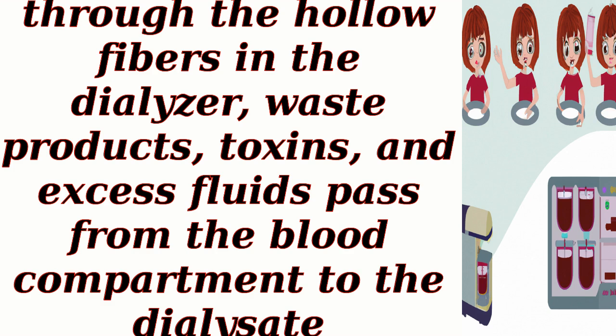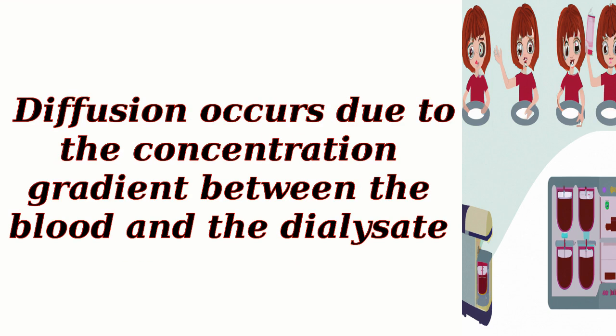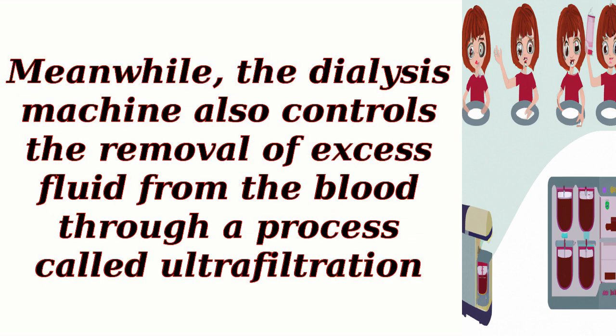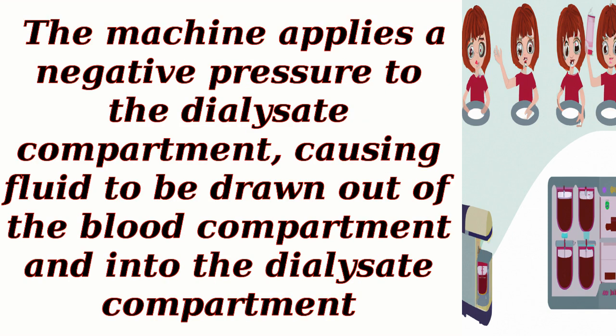Diffusion and ultrafiltration: as the blood flows through the hollow fibers in the dialyzer, waste products, toxins, and excess fluids pass from the blood compartment to the dialysate compartment through a process called diffusion. Diffusion occurs due to the concentration gradient between the blood and the dialysate. Meanwhile, the dialysis machine also controls the removal of excess fluid from the blood through ultrafiltration, applying a negative pressure to the dialysate compartment, causing fluid to be drawn out of the blood compartment and into the dialysate compartment.